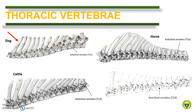In contrast with the dog, in the horse, the first thoracic vertebra is the shortest. The first four thoracic vertebrae increase in height and become shorter up to the 13th or 14th vertebra. In fact, the first three or four thoracic vertebrae constitute the osseous base for the withers. The T16 is the anticlinal vertebra. In cattle, the first three vertebrae increase in height and become progressively shorter up to the 12th to 13th vertebra. The T13 is the anticlinal vertebra.